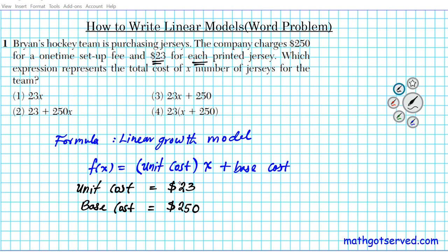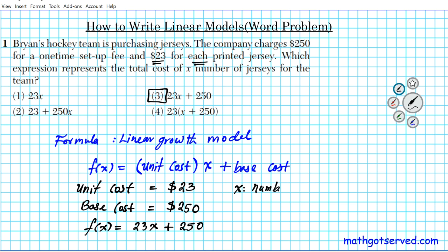We have everything we need, so let's put it all together to generate the linear model. Using the formula, f(x) = 23x + 250. The expression 23x + 250 — option number 3 — is the answer. Here x represents the number of jerseys printed. That's how you generate a linear model presented in a word problem format.